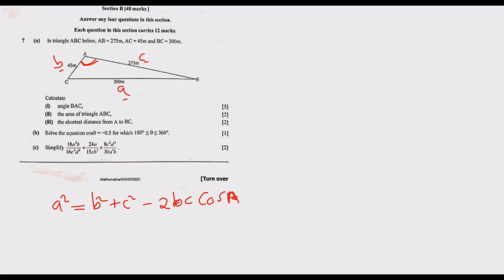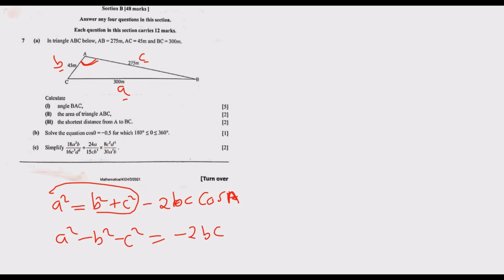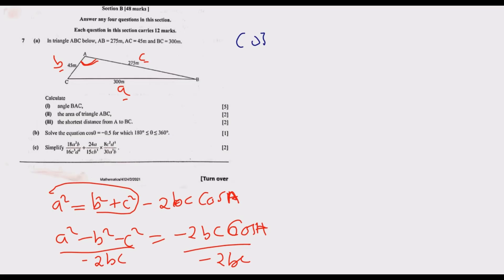Side a has been given, b has been given, and c has been given — what we don't know is just angle A. So we solve for cos A. Rearranging, we get: a squared minus b squared minus c squared equals negative 2bc cos A. Dividing both sides by negative 2bc, we end up with cos A expressed in terms of the known sides.